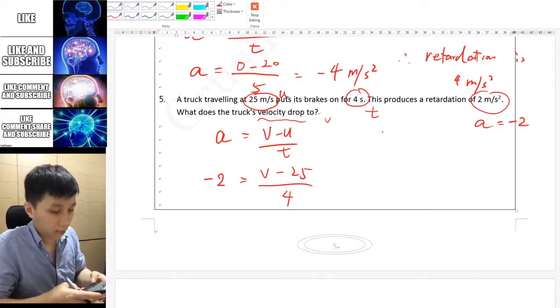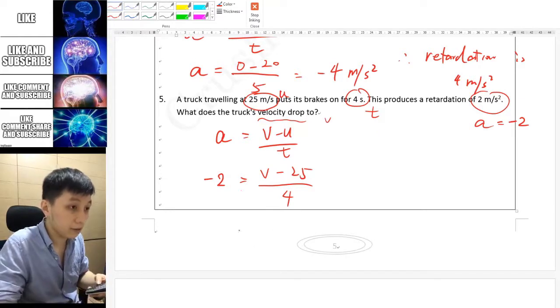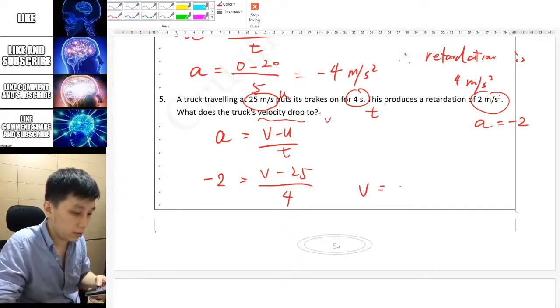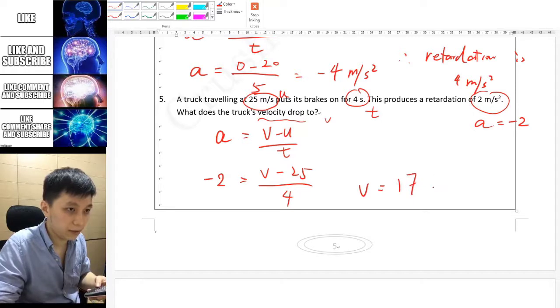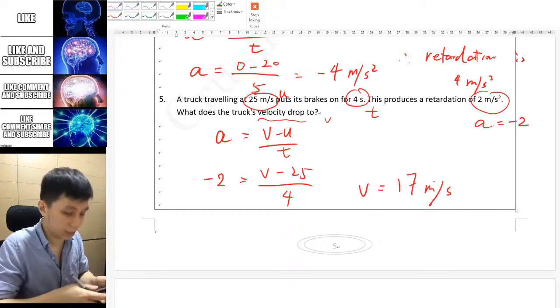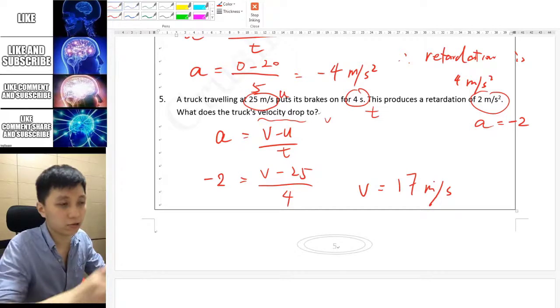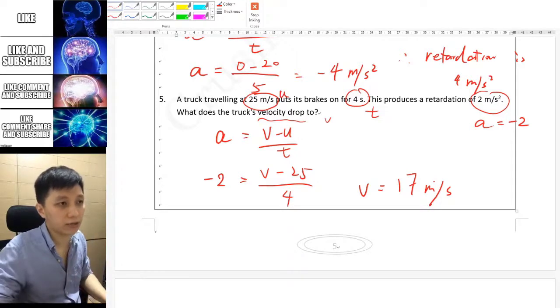Let's substitute: negative 2, v is unknown, u is 25, t is 4. Using your calculator, negative 2 times 4 plus 25, then you can get v equals positive 17 meters per second. So this is the final velocity that this truck will get to after 4 seconds.